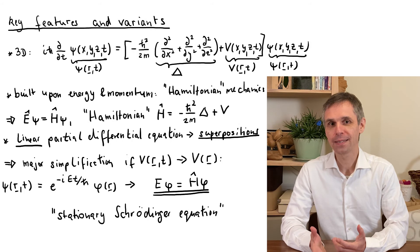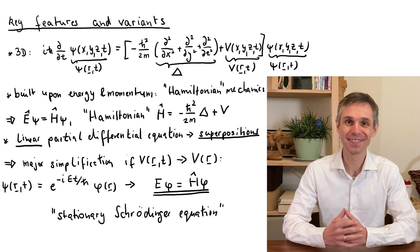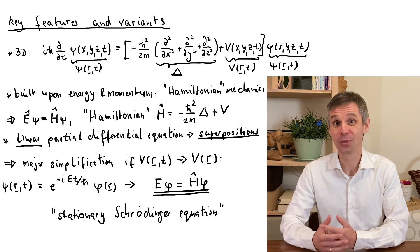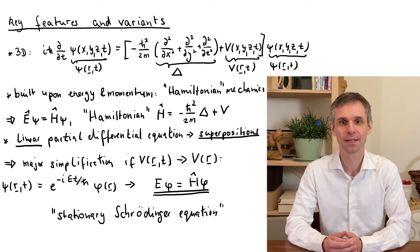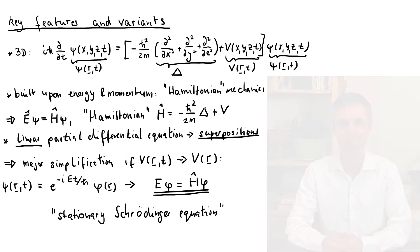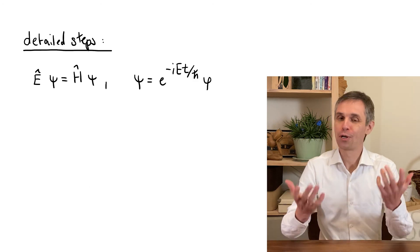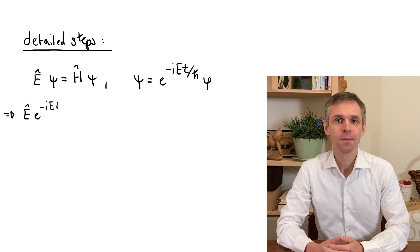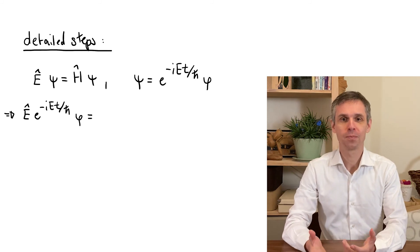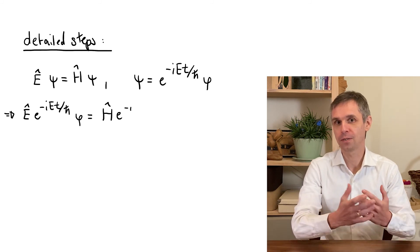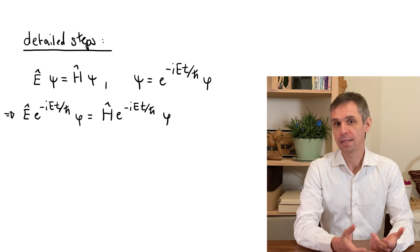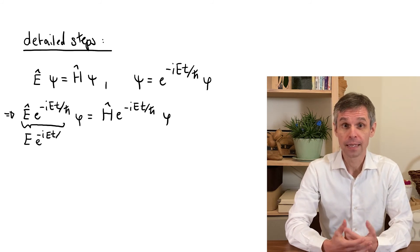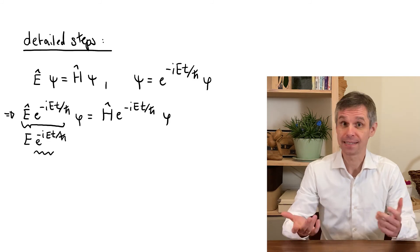Note that mathematically it also takes the form of an eigenvalue equation, where the energy is the eigenvalue of the Hamiltonian. Here are the promised steps of the derivation of the stationary Schrödinger equation, with the key points being that the energy operator becomes replaced by a constant as the exponential function is its eigenfunction, and that the time-dependent part then cancels.